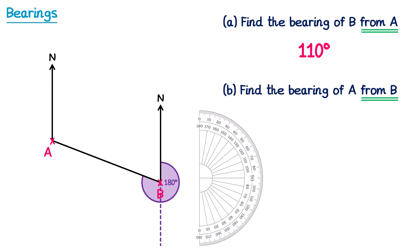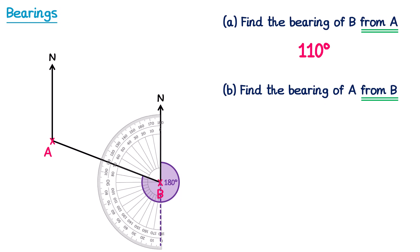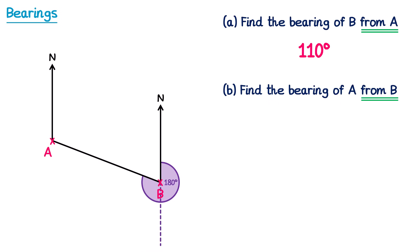To do this, we take the protractor and place it on like we normally do, apart from we spin it round half a turn so that the zero on the outside is now at the bottom. We can then measure around the outside scale until we get to the line, and you can see that this angle here is 110 degrees. So the remaining part of this angle is 110, which means the total angle must be 180 plus 110, which is a bearing of 290 degrees.